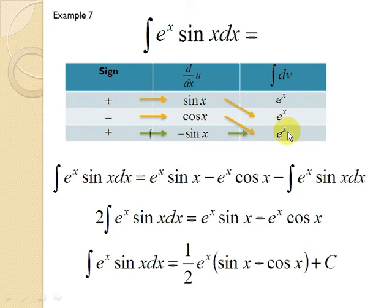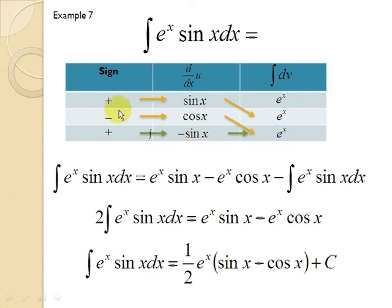This example is very interesting — you find that the first row and the third row have the same function, just with different coefficients. So what you have to do is stop here, and you have sin(x) times e^x, then minus cos(x) e^x, and then plus the integral of negative sin(x) e^x dx.